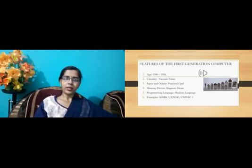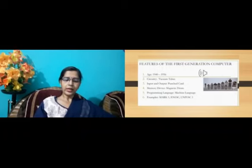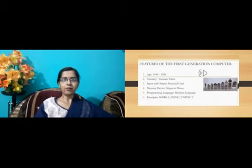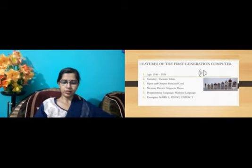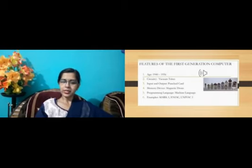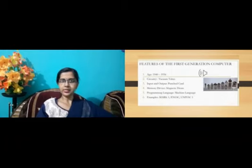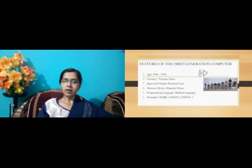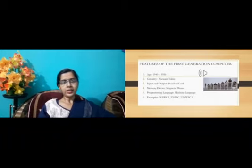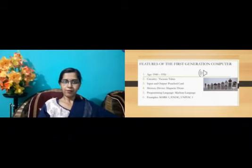Next came the UNIVAC-1. The Universal Automatic Computer was an electronic digital computer designed for business applications. It was also designed by John Mauchly and J. Presper Eckert, who had earlier designed ENIAC. The system used about 5000 vacuum tubes and could perform about 1905 operations per second.